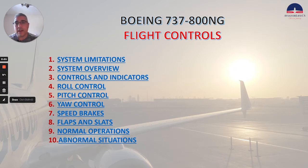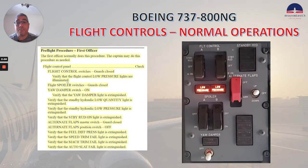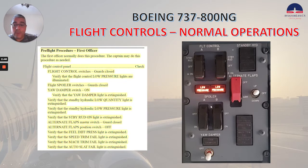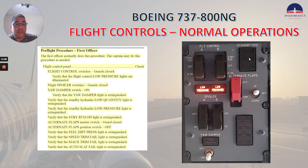Let's start with the pre-flight procedure, which is usually done by the first officer. What we have to check here is the flight control panel, which you see a picture here. We check the flight control switches are guards closed. Verify that the low pressure lights are illuminated. Fly spoiler switches guards closed. Yaw damper switch on. Verify that the yaw damper light is extinguished. Verify that the standby hydraulic low quantity light is extinguished. Verify that the standby hydraulic low pressure light is extinguished.